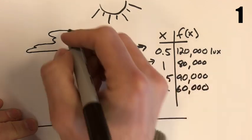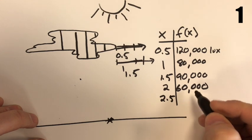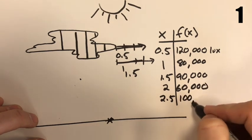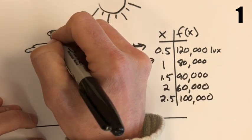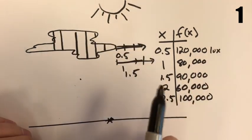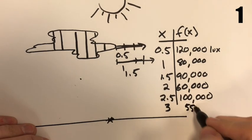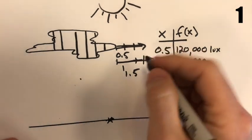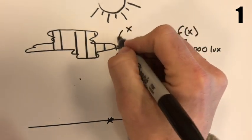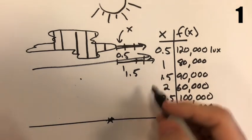After two and a half miles we're at an even thinner part, back up to 100,000 lux. After three miles — and this picture is obviously not accurate — we're back down to 55,000 lux at a thicker part of the clouds. So if x is the distance that the cloud is traveling from left to right and f(x) is the luminous intensity on that spot on the ground, that's our data.